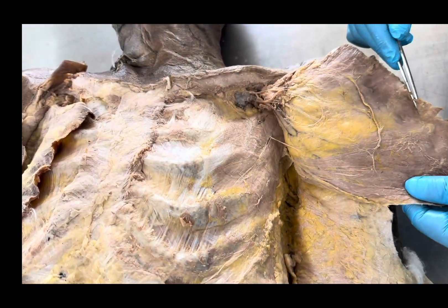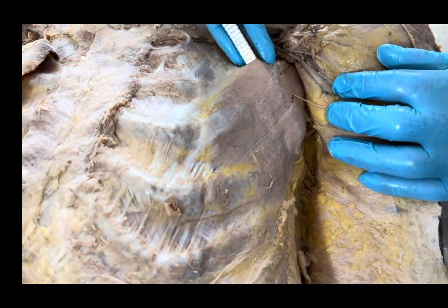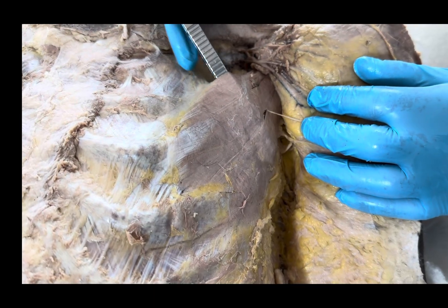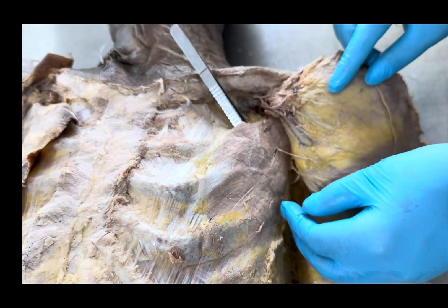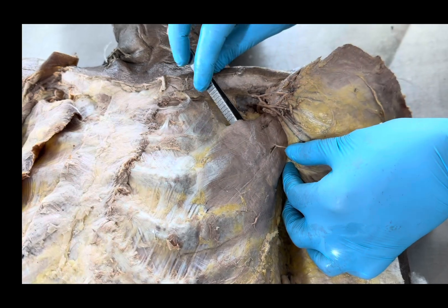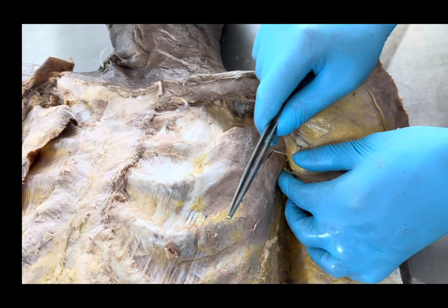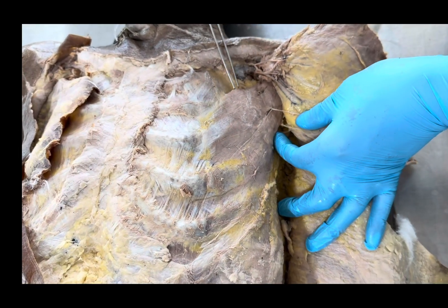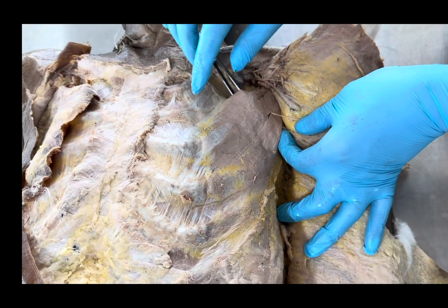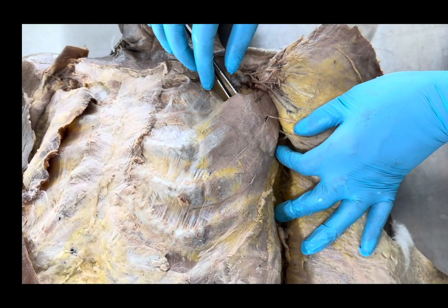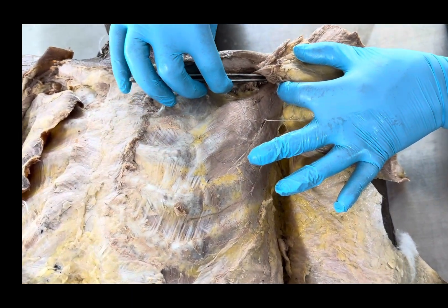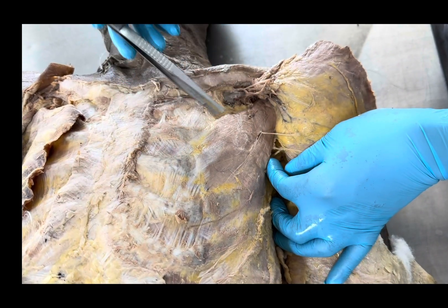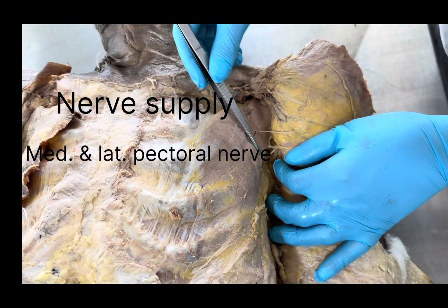Deep to pectoralis major, when I lift it, we can see another muscle — the pectoralis minor. Pectoralis minor takes origin from the third, fourth, and fifth ribs, which you can see here. It is inserted into the tip of the coracoid process.